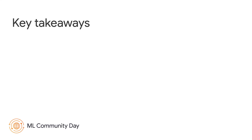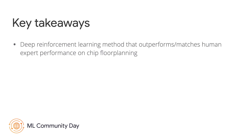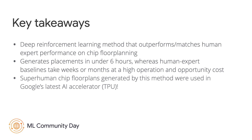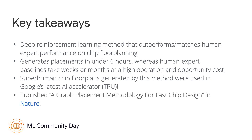Some key takeaways from this talk: we're going to describe a deep reinforcement learning method that is capable of outperforming or matching human expert performance on the task of chip floor planning. This method can generate superhuman chip layouts in under six hours, whereas human experts take weeks or months at an extremely high cost. Superhuman layouts generated by this method were used in Google's latest AI accelerator TPU, which was taped out earlier this year. We recently published this work in Nature.